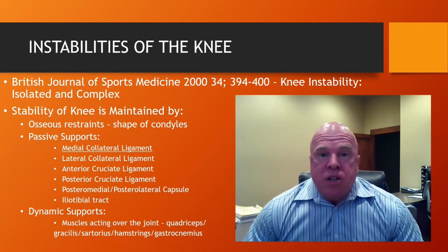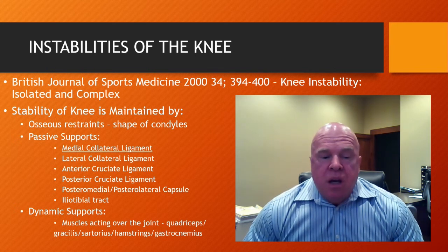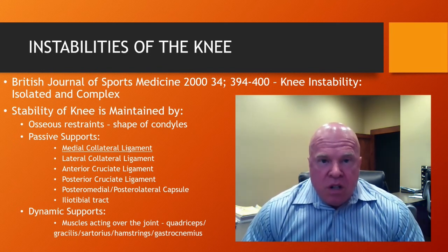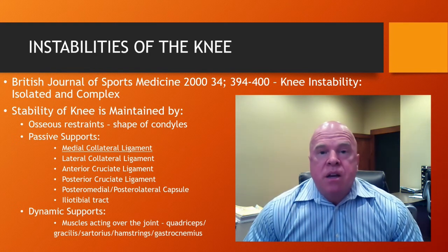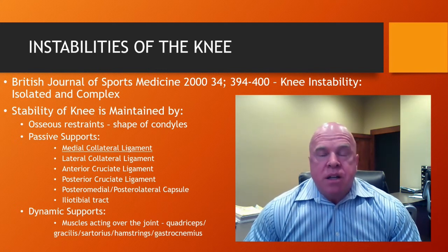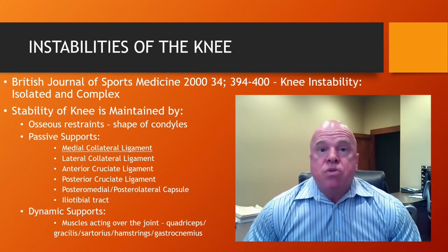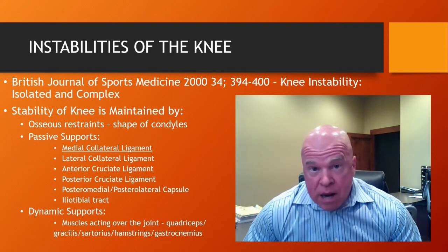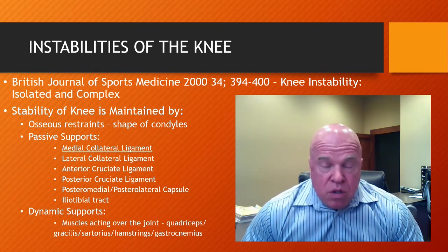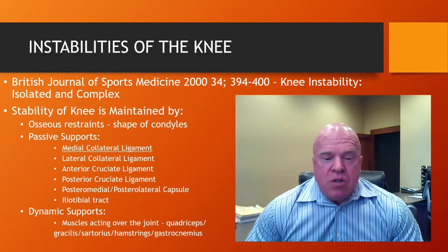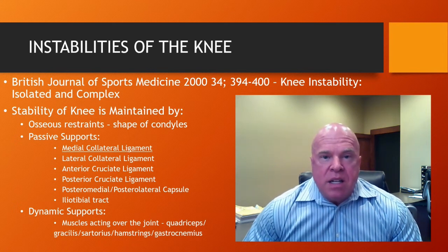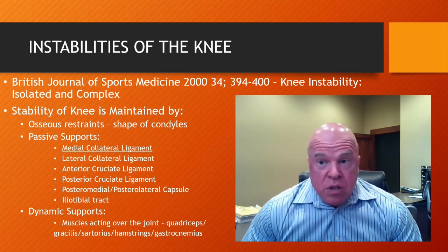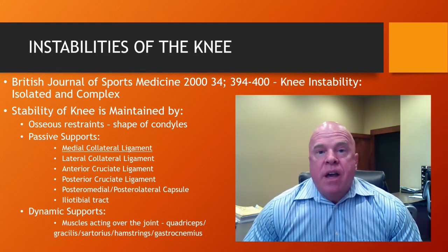We'll talk more about the joint capsules and other supportive structures in a couple of minutes. In addition to the passive restraints, the knee is also stabilized by dynamic stabilizing structures, which consist of the muscles and their tendons that cross the knee joint — the quadriceps, the medial and lateral hamstring muscles consisting of the biceps femoris laterally and both the semimembranosus and semitendinosus medially, and also the sartorius, the gracilis, and the gastrocnemius. Those are the main structures that contribute to stability and resist excessive motions around the knee.